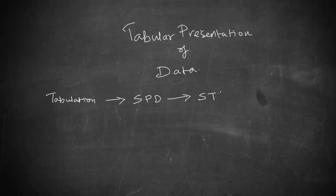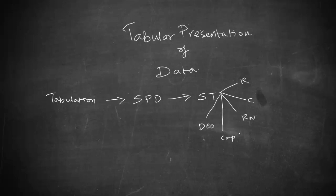This table will have a certain number of rows, a certain number of columns, a reference number, a description, a caption, and so on. In this table you will present a lot of information in a single shot, in a snapshot. That is the beauty of tabular presentation of data.